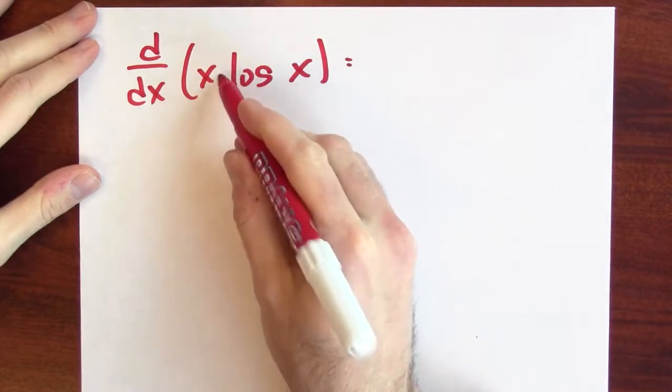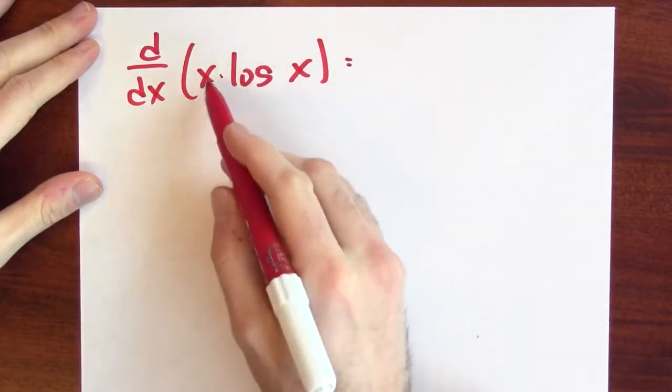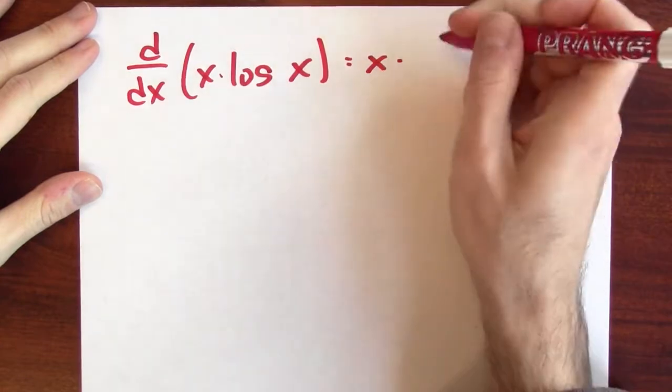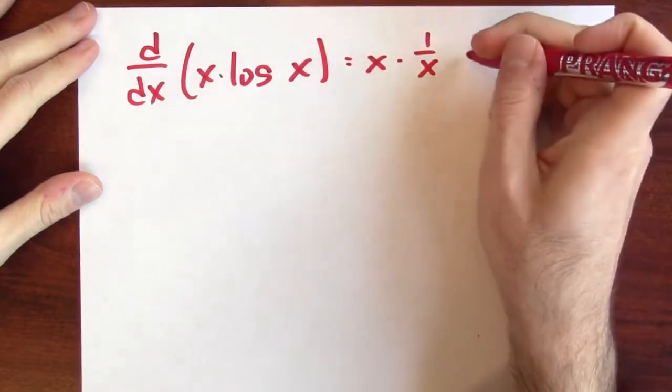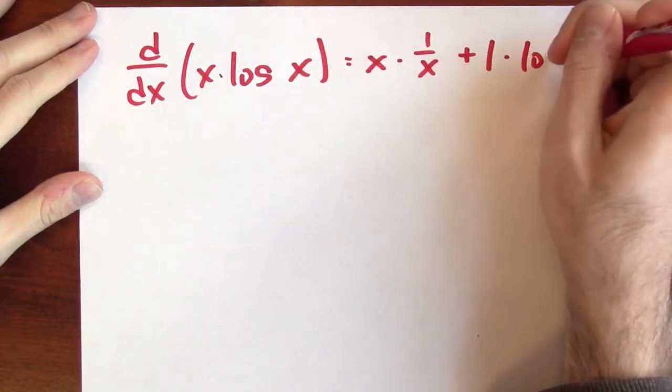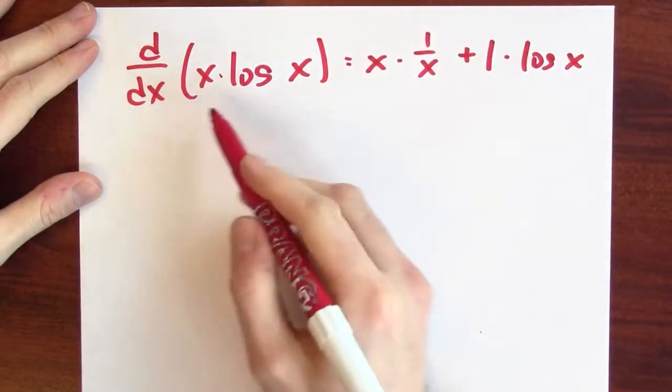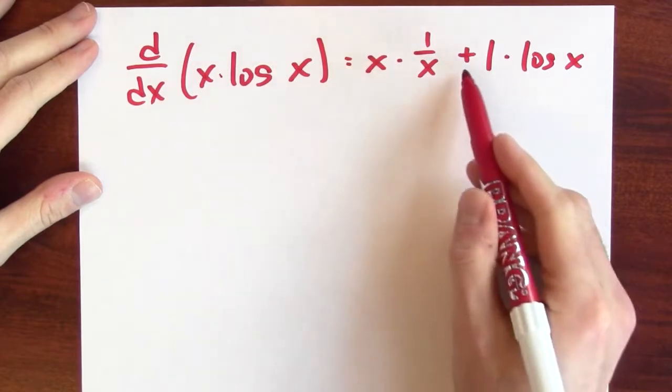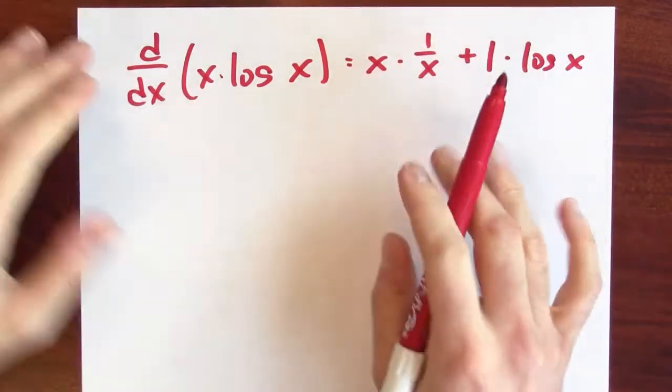This is the derivative of a product. By the product rule, it's the first thing times the derivative of the second plus the derivative of the first thing times the second thing. The derivative of x times log x is 1 plus log x, not too far off.